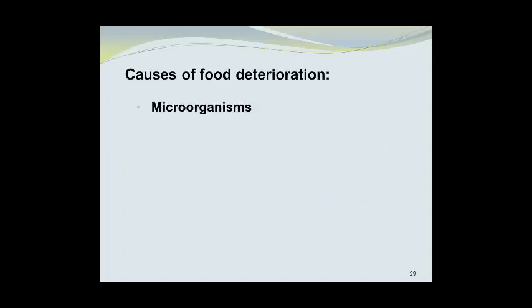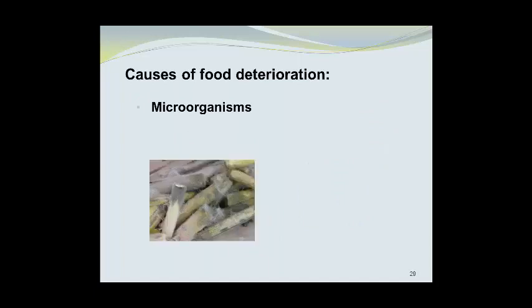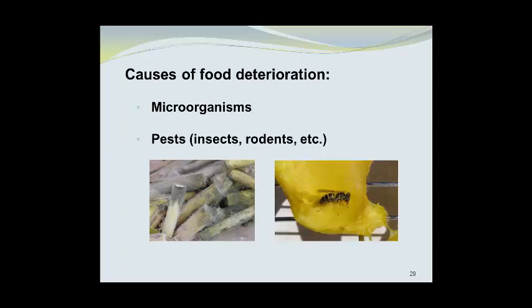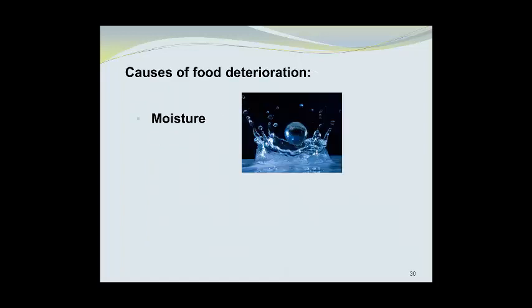Causes of food deterioration include microorganisms. Here we see some mold growing on samples of a product that I was trying to dry. Pests include insects and rodents and a host of other things. Here we see a wasp sitting on a slice of mango that I was drying on an open-air dryer in the backyard one sunny day. Moisture is a big cause of food deterioration. Chemical reactions take place in the presence of water, as does microbial growth. So by eliminating water, we can reduce the rates of chemical reactions and the rates of microbial growth.